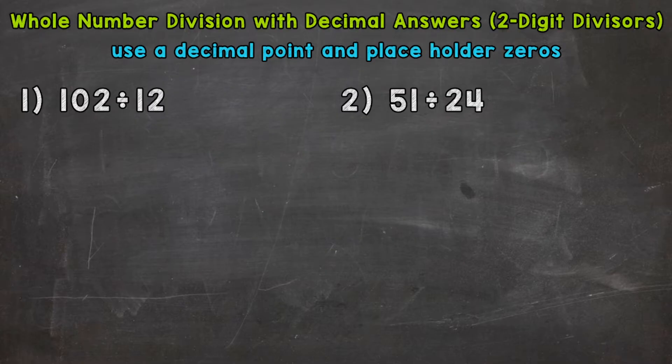You'll see exactly what I mean by that as we go through our two examples. So let's jump into number one where we have 102 divided by 12. The first thing we want to do is set up the problem. So 102 divided by 12.